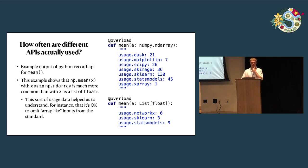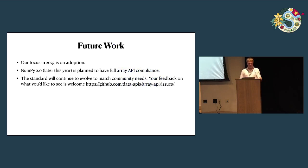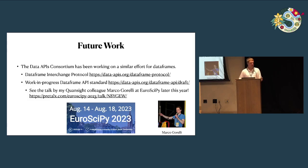For future work, our focus is on adoption. NumPy 2.0 should have full support for the array API. But we want the standard to keep evolving, so if you have any feedback, please let us know. I didn't get to talk about it today, but there's been a similar effort going on for dataframes — it's not as far along as the array effort, but so far there's an interchange protocol and a dataframe API in progress. If you want to hear more about that, please see my colleague Marco Gorelli's talk at EuroSciPy later this year.